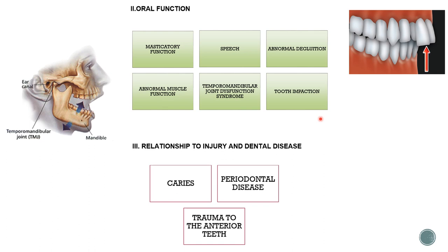If you cannot chew your food properly because of malocclusion, you cannot swallow it properly either. Abnormal muscle function — the whole mouth is covered by muscles, and any malocclusion will cause abnormal muscle function, leading to either excessive or decreased function of certain muscles. Regarding the temporomandibular joint — the mandible is the movable jaw and the maxilla is fixed; movement of the mandible is made possible by the TMJ.